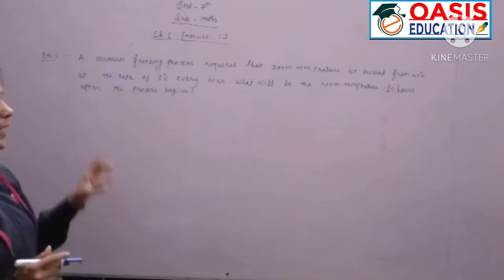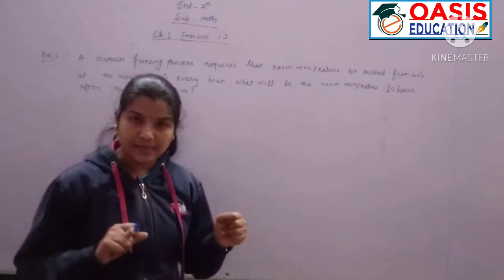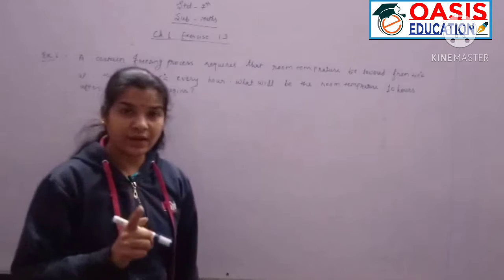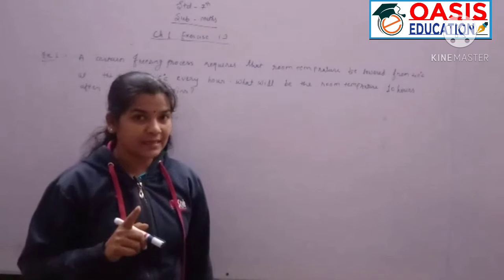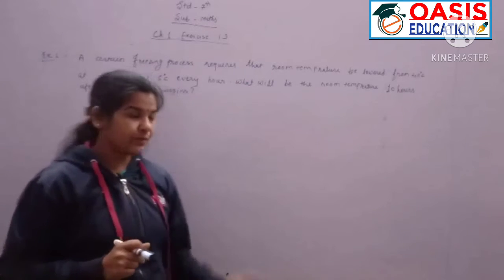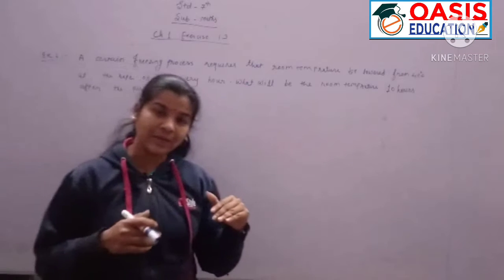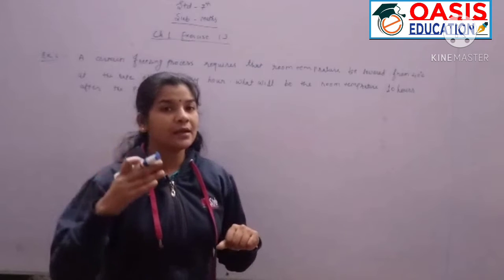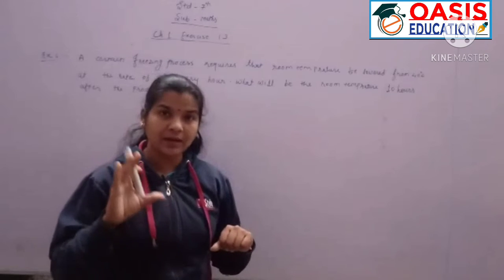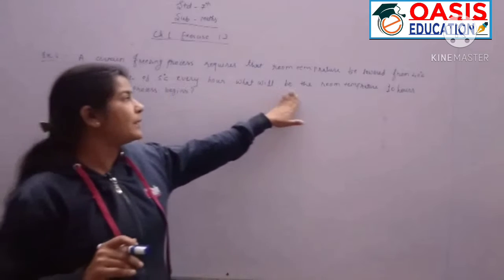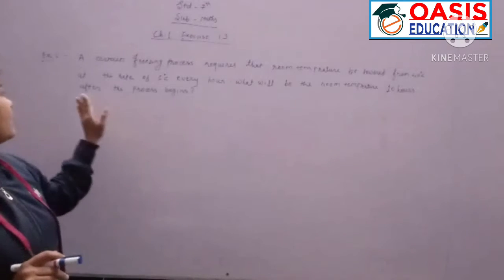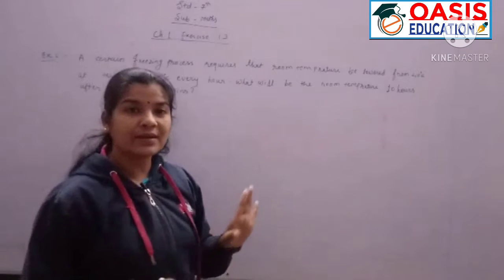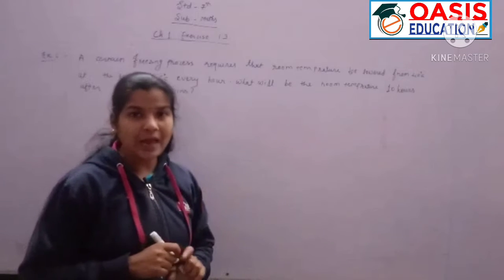So, the room temperature starts at 40 degrees Celsius. Every hour it decreases by 5 degrees Celsius. The question asks: what will be the room temperature 10 hours after the process begins?